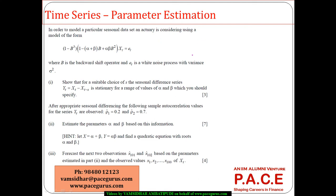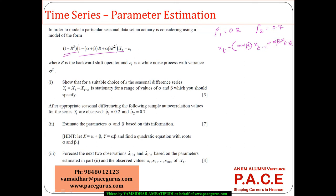After appropriate seasonal differencing, the following sample autocorrelations for the series Yt are observed: rho1 = 0.2 and rho2 = 0.7. Removing the seasonality, the expression becomes Xt minus (alpha + beta)Xt-1 plus alpha*beta*Xt-2 = Et, or equivalently Xt = (alpha + beta)Xt-1 minus alpha*beta*Xt-2 plus Et.